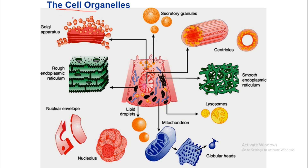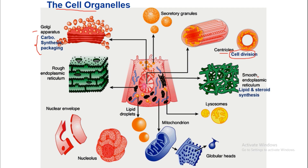We begin with the Golgi apparatus — here the carbohydrate synthesis and packaging occurs. The pouches are formed inside the Golgi apparatus. Second, the centrioles which help in cell division. Next, the smooth endoplasmic reticulum, where lipid and steroid synthesis takes place.